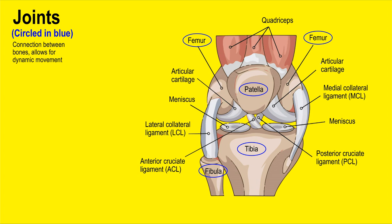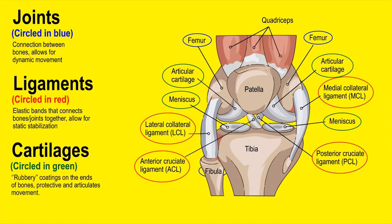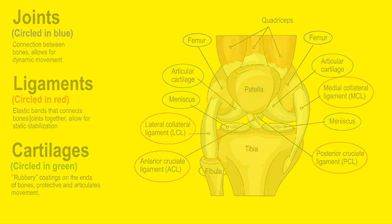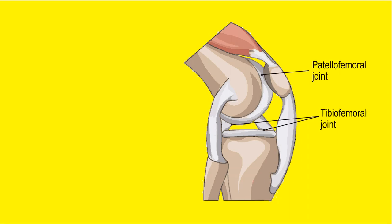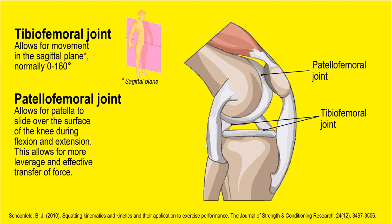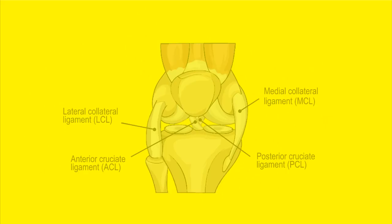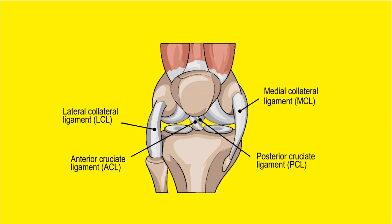In the knee area we have several joints surrounded by various ligaments and cartilages. Ligaments mainly stabilize the joints in a static manner, while the musculature around the knees stabilizes dynamically. The two main joints are the tibiofemoral joint and the patellofemoral joint. The tibiofemoral joint is responsible for movement in the sagittal plane, normally 0 to 160 degrees. The patellofemoral joint allows the patella to slide effectively over the knee surface during flexion and extension, providing more leverage and effective transfer of force during a squat.